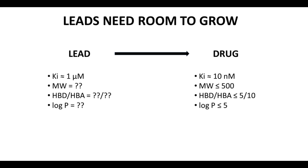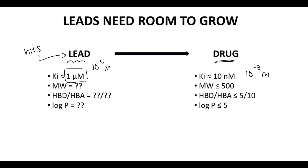Where do we get our leads? We get our leads from our hits. A hit probably has a Ki of about 1 micromolar — that's 10 to the minus 6 molar. And we want to eventually make a drug which is going to have a Ki of about 10 nanomolar, which is 10 to the minus 8 molar. So we need to increase the potency of our drug. How are we going to do that? By adding molecular weight and hydrogen bond donors and acceptors, which will probably also increase log P.